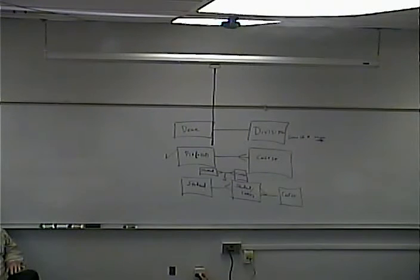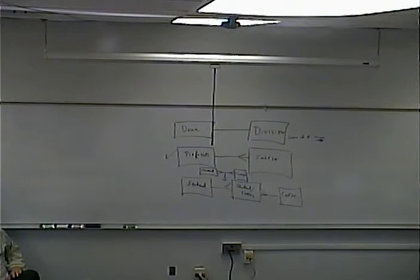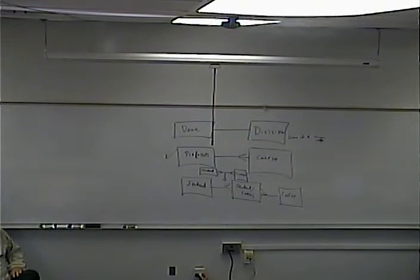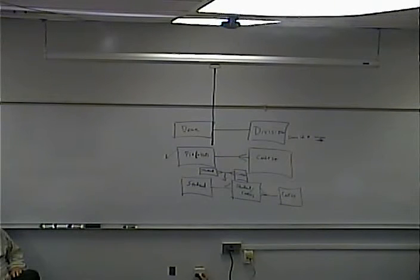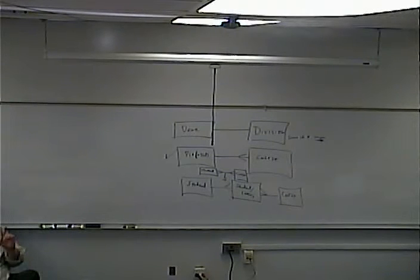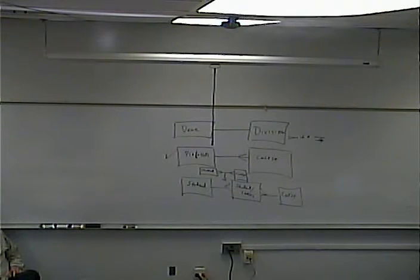A unique index is probably the way to implement a one-to-one relationship. A unique index is also used for what's called a candidate key. Given that it's election time, everyone knows about candidates — a candidate key is something that could be the primary key if it gets elected to that position.